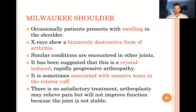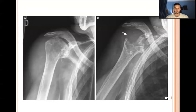Milwaukee shoulder is an uncommon condition where patients present with shoulder swelling. X-ray shows a bizarre destructive form of arthritis, and it is associated with massive rotator cuff tears. The massive destruction of the humeral head is visible on imaging.